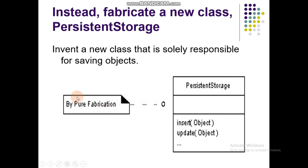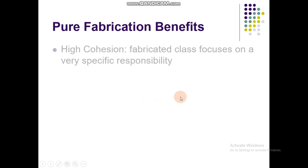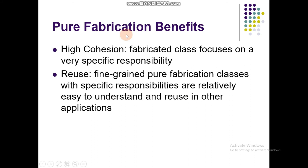When we apply Pure Fabrication, we create a new class with insert and update functions, and the object is passed as a parameter. The whole class is responsible only for saving objects. The benefit is high cohesion — the fabricated class focuses on a specific responsibility and reusability will be high.